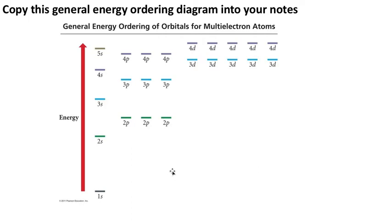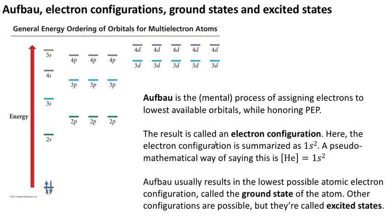To keep yourself organized on this, I recommend that you copy this general energy ordering diagram into your notes and memorize it. Energy is on this axis. Here's that first shell with a 1s orbital, here's the second shell which has those four, here's the third shell that has also four orbitals. We're going to ignore those guys there for the moment.